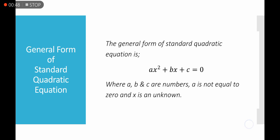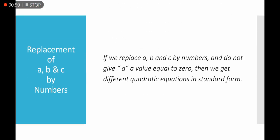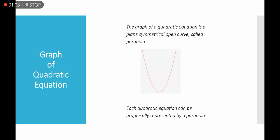If we replace a, b, and c by numbers and do not give a a value equal to 0, then we get different quadratic equations in standard form. The graph of a quadratic equation is a plane symmetrical open curve called a parabola. Each quadratic equation can be graphically represented by a parabola.